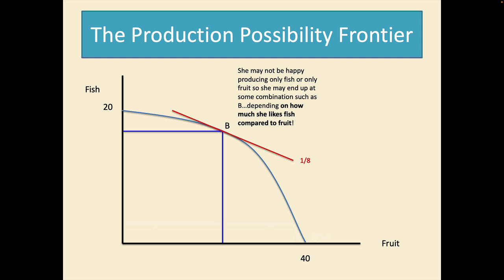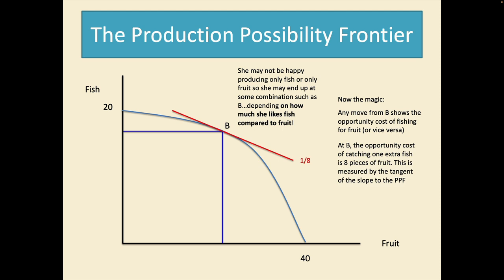Now the magic. Any move from B is showing her particular opportunity cost of moving from fishing to fruit or fruit for more fishing. At B the opportunity cost is measured by one extra fish caught is losing eight pieces of fruit or if she wants to get eight pieces of fruit she loses a fish. This is the tangent of the slope to the production possibility frontier. Should ring a bell for those doing A level maths with regards to what you will be doing in calculus.